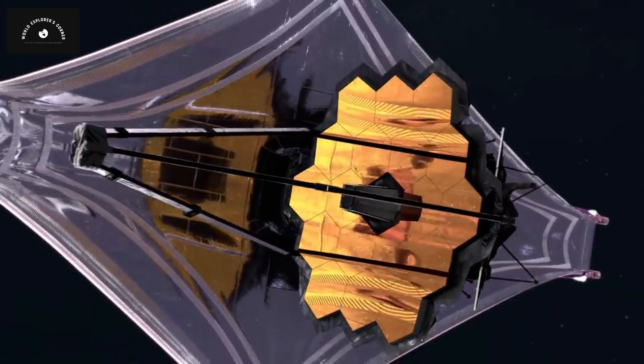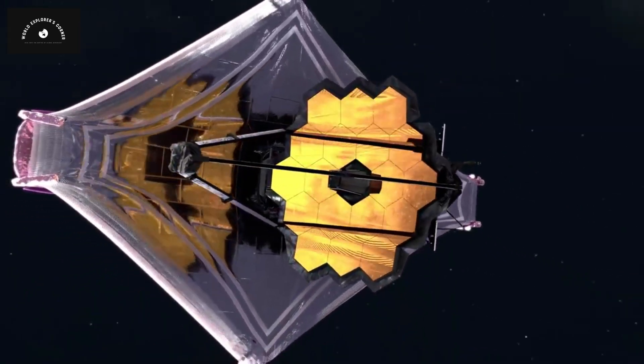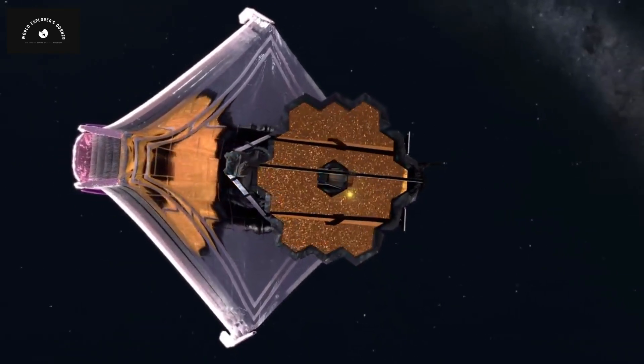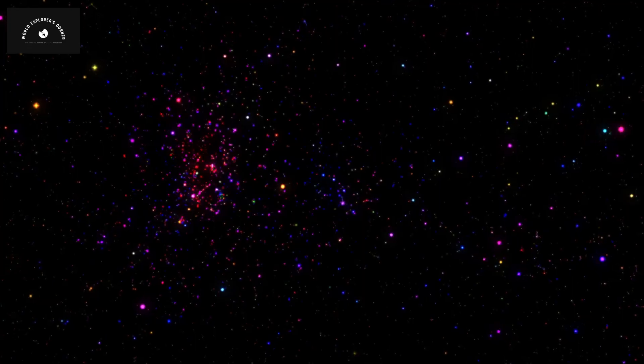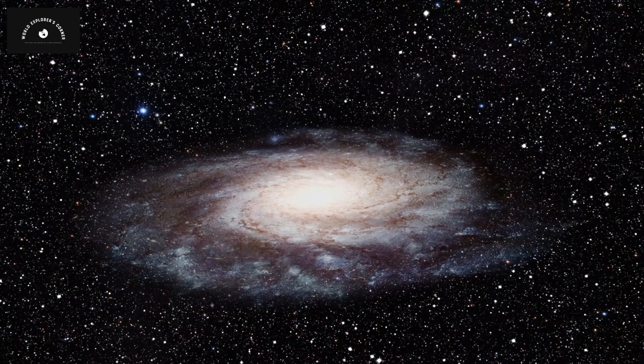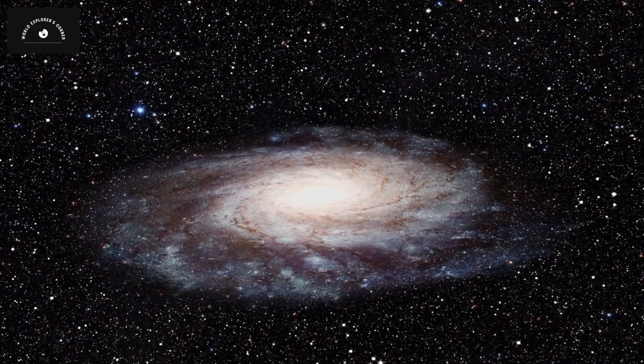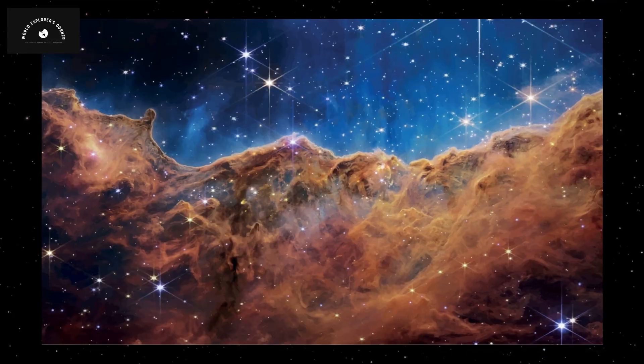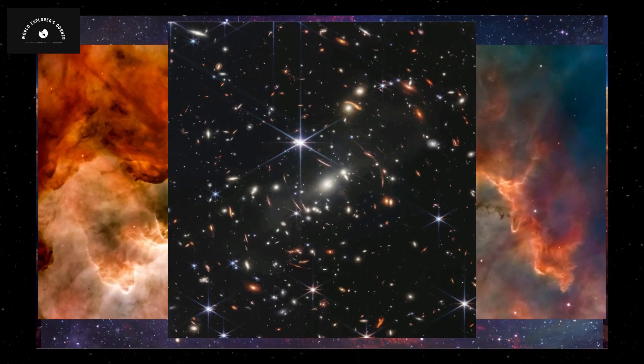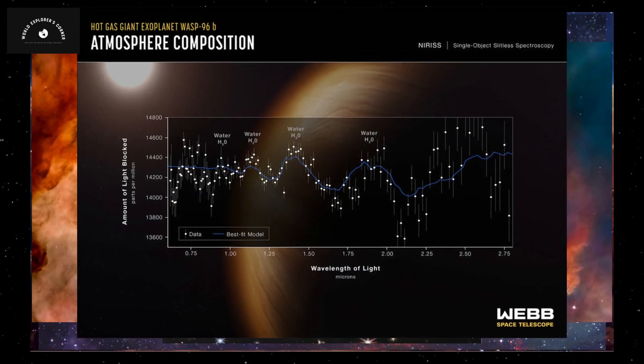This telescope has the ability to rewind time and observe what happened in our universe millions of years ago, including the birth of different stars, planets, and galaxies. It can even capture the remnants of stars that no longer exist. Now, let's delve into the photos that James Webb has captured in the last few months.